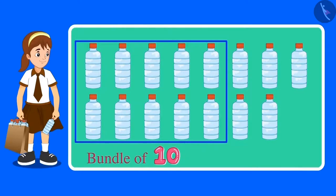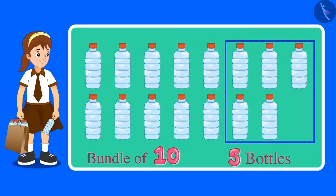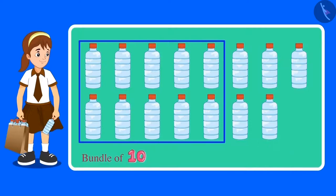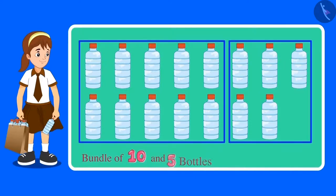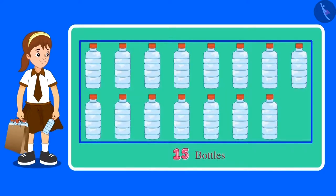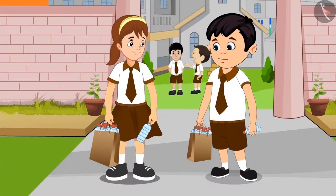These are 10 bottles — that is one bundle of 10 — and there are five more bottles. So a bundle of 10 and five more are 15 bottles. This means Aarti has collected a total of 15 bottles.